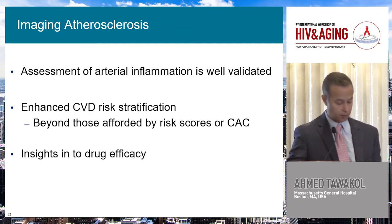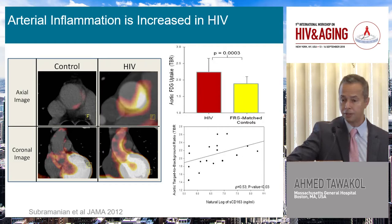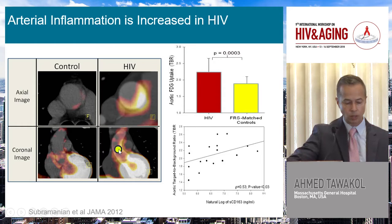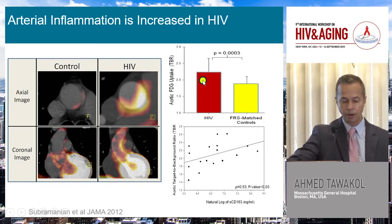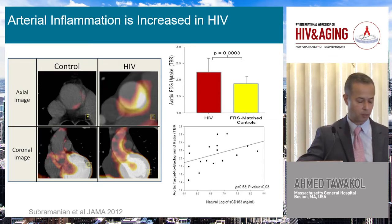What about insights into mechanisms of disease? Here is a study where we looked at the arterial milieu in individuals living with HIV. Here is a patient living with HIV with intense FDG uptake visible up and down the aorta, compared to an age- and gender-matched and Framingham risk score-matched control with substantially less activity. When we look at the entire population, individuals living with HIV have substantially greater arterial inflammation compared to matched controls, and the degree of arterial inflammation tracked with markers of monocyte activation.